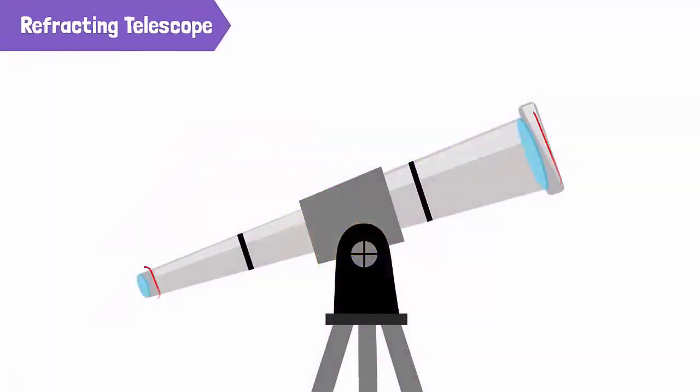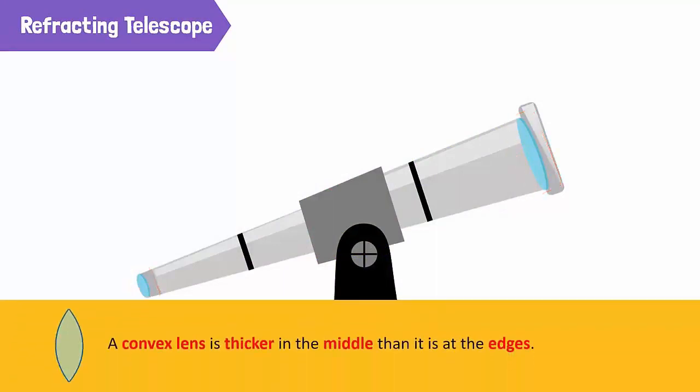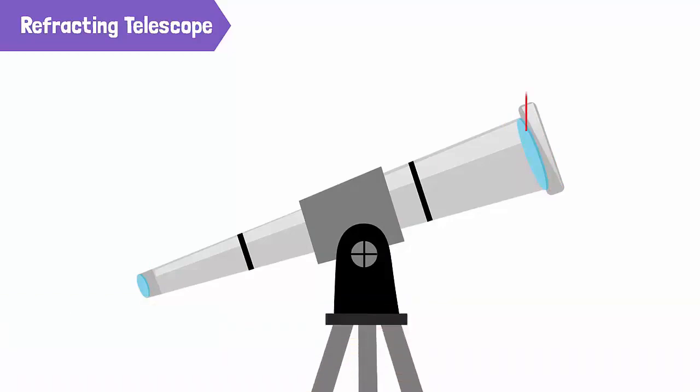Refracting telescopes contain two convex lenses. Convex lenses are thicker in the middle than they are at the edges. One lens is called the objective lens and the other is the eyepiece. They are both fixed in a long tube.